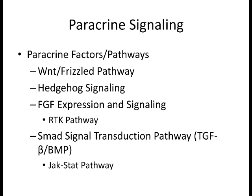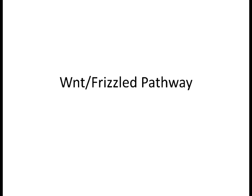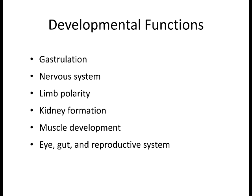This pathway is very instrumental in a number of different processes, and the same pathway can affect multiple processes based upon the history of the cell. It affects gene expression, as most of these do, differentiation, and polarity — because there is polarity in cells.